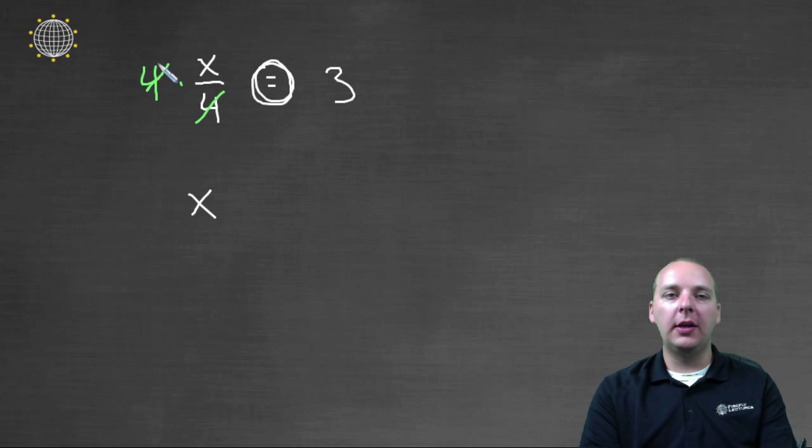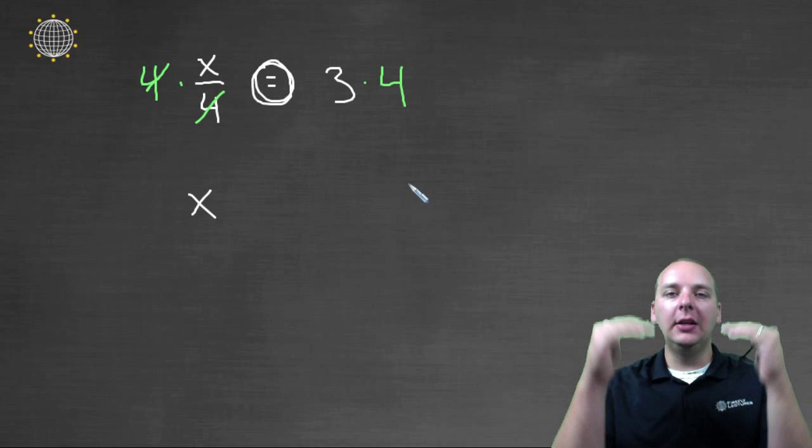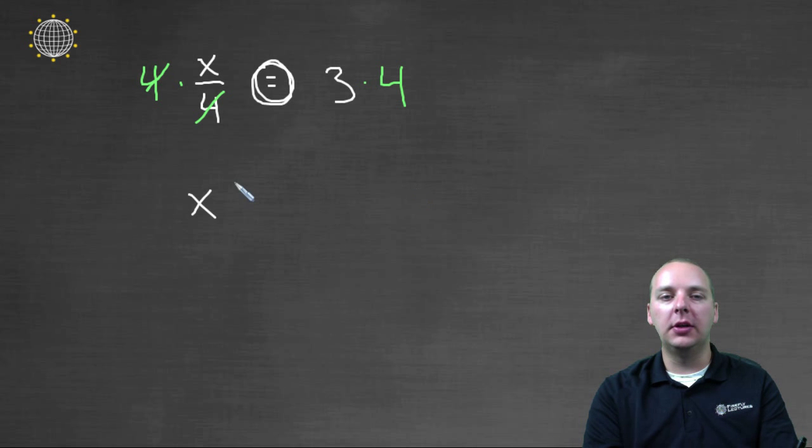So if you want to multiply the left hand side by four, totally fine. But we also have to multiply the right hand side by four as well, so that we're increasing them proportionately. Three times four gives us twelve. And so we would get x equals twelve.